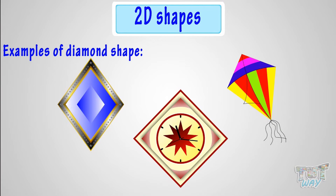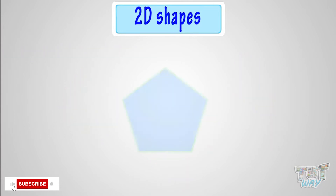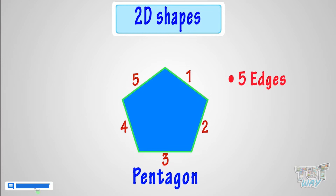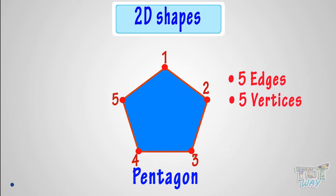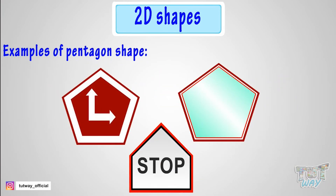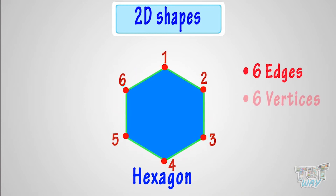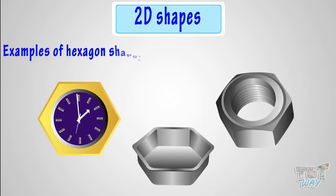So we have learned all the four-sided polygons. Now we will learn polygons that have more than four sides. A pentagon is a polygon that has five straight sides. It has five vertices and five edges. A hexagon is a polygon that has six straight sides. It has six vertices and six edges. These are some hexagon-shaped things.